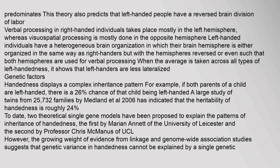This theory also predicts that left-handed people have a reversed brain division of labor. Verbal processing in right-handed individuals takes place mostly in the left hemisphere, whereas visual-spatial processing is mostly done in the opposite hemisphere. Left-handed individuals have a heterogeneous brain organization in which their brain hemisphere is either organized the same way as right-handers but with hemispheres reversed, or such that both hemispheres are used for verbal processing. When the average is taken across all types of left-handedness, it shows that left-handers are less lateralized.